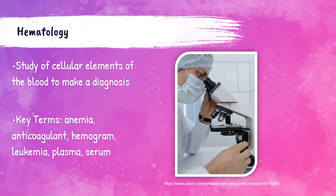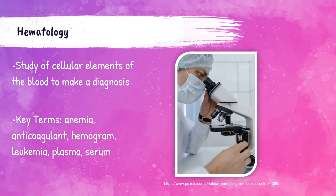An anticoagulant is a chemical substance that prevents or reduces the coagulation or clotting of blood. Anticoagulants are used therapeutically as medications and are also found in specific blood specimen tubes. A hemogram is a visual representation of a complete blood count. Leukemia is a type of blood cancer. Plasma is the liquid portion of anticoagulated blood samples and still contains fibrinogen. Serum is the clear yellow fluid remaining after blood has clotted and been centrifuged, and does not contain fibrinogen.